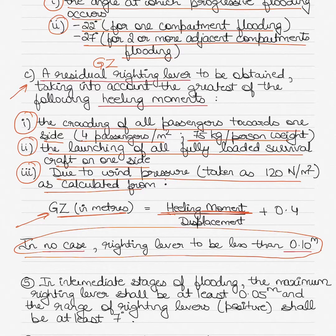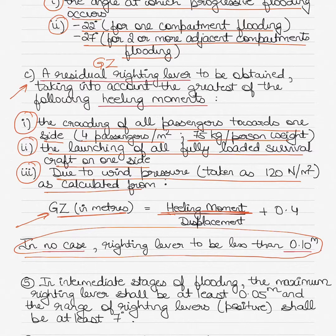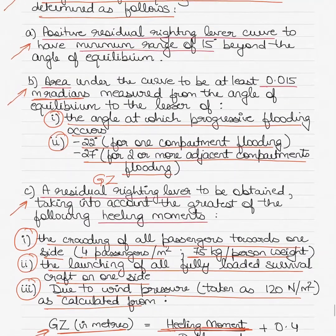If all the passengers crowd on one side of the passenger vessel, it's like putting all the cargo on one side. If there is any heeling due to that, we need sufficient GZ or righting lever to upright the vessel. We assume four passengers per meter square length of the vessel and each person is 75 kilograms. If all fully loaded survival crafts are launched from one side, or the wind is acting on one side causing heel, we require some righting moment that cannot be less than 0.10 in any condition.